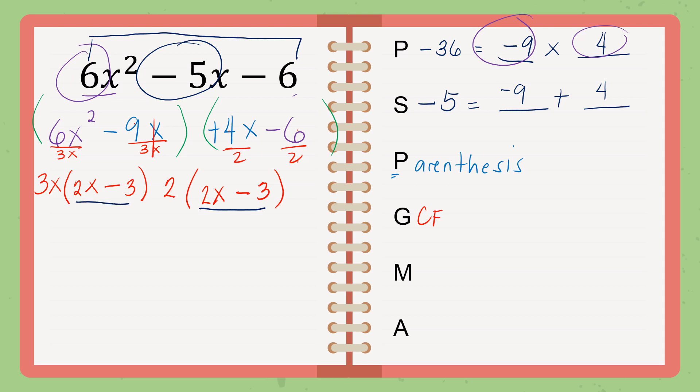Therefore, the next step is the so-called merge. Combine them as 1. Okay? Just copy 2x minus 3. Then, what's outside, just write 3x plus 2. Okay? Then, this is now the answer. And that is the last step. Answer.